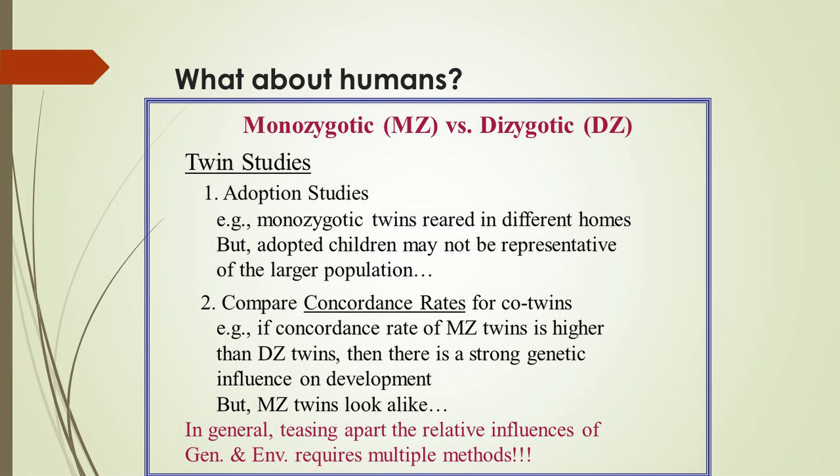There are some potential confounds with this type of twin study as well. Monozygotic twins look alike, while dizygotic twins do not necessarily look alike, so the environment is more similar for monozygotic twins. We know through social psychology that people tend to react to others based on appearance, and if one's appearance is similar to another person's, then perhaps one's environment is also more similar. Before we finish talking about twins, suppose a pair of twins is composed of one male and one female twin — are they monozygotic or dizygotic?